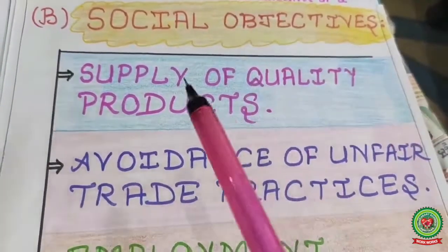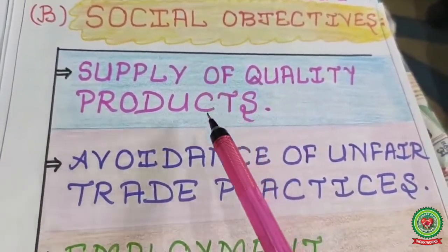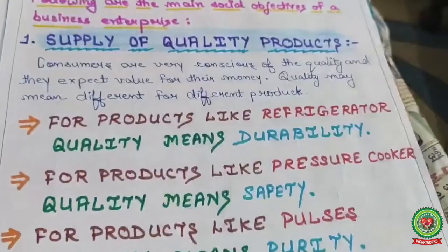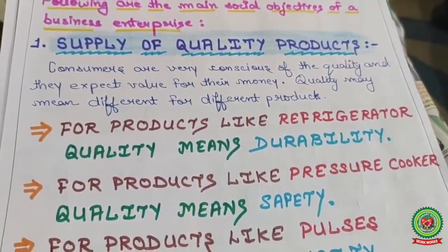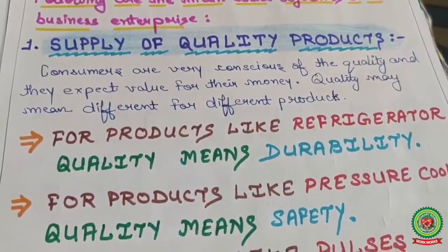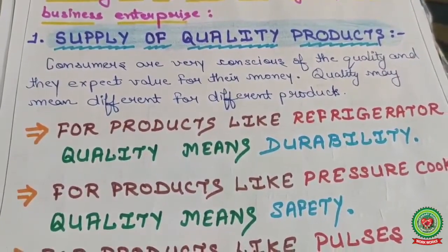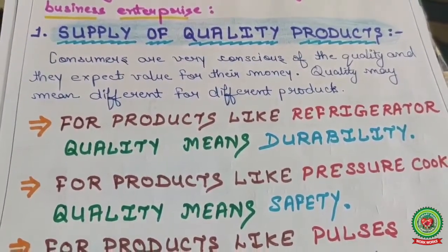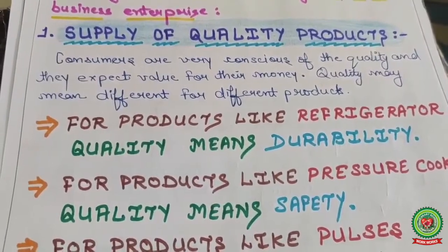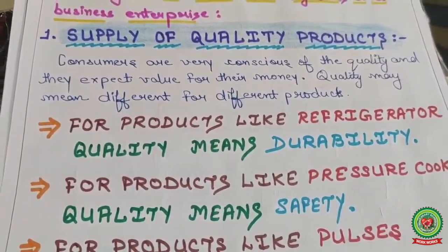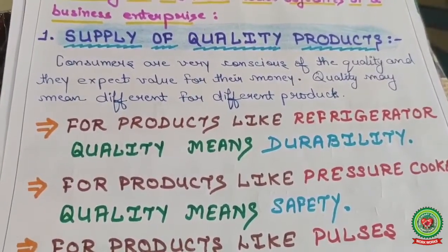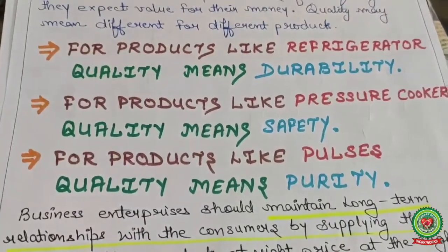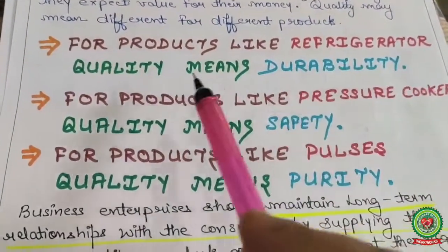According to your book, the first social objective is supply of quality products. Consumers are very conscious of quality and they expect value for their money. When you spend money, you want satisfaction — value for money. Quality may mean different things for different products. For example, for a refrigerator, quality means durability.